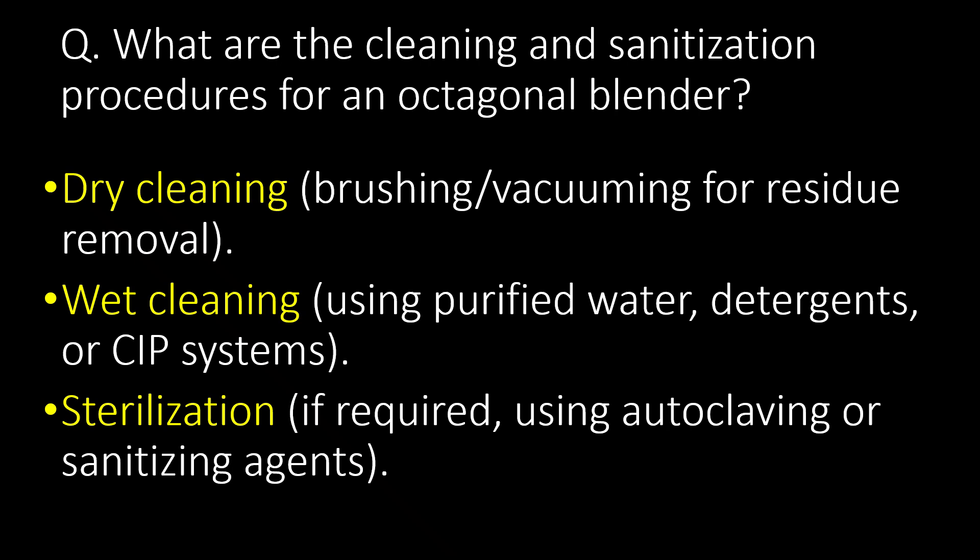What are the cleaning and sanitation procedures for an octagonal blender? First, dry cleaning — using brushing and vacuuming for residue removal. Second, wet cleaning — using purified water, detergents, or CIP systems. And third, very importantly, sterilization if required, using autoclaving or sanitizing agents.